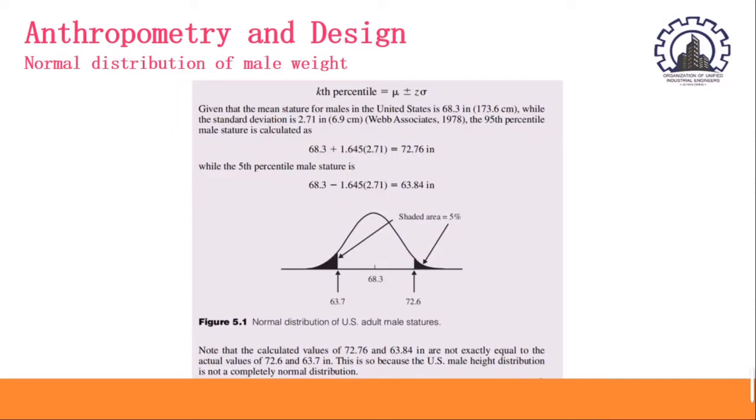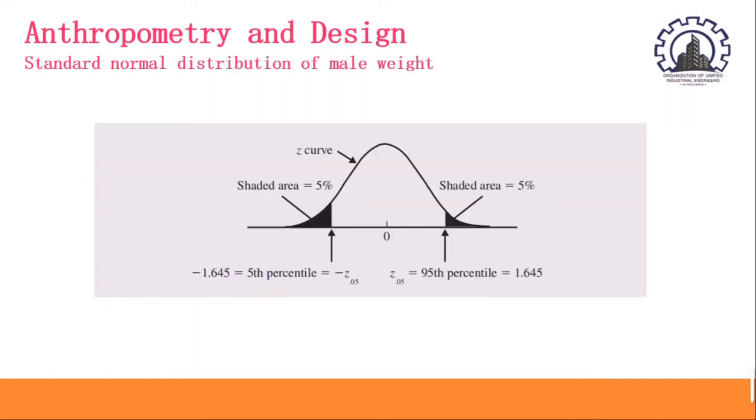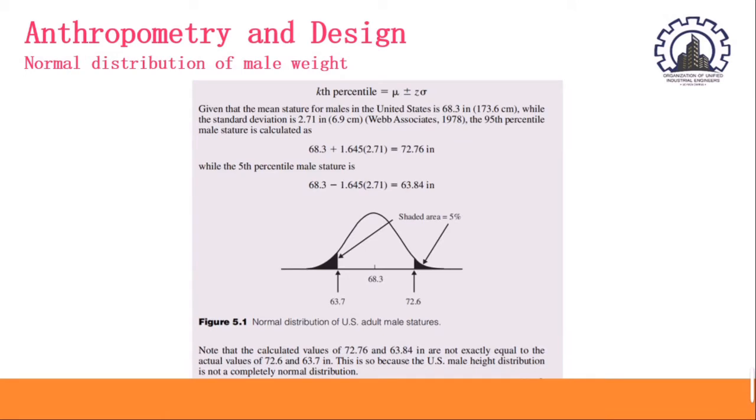Now, we are going to look at the normal distribution curve. As you can see, the figure below is closely related or identical to the standard normal distribution of male weight. Shaded area of the left side is 5% as well as the right side, and the left side is the 5th percentile, while the right side is the 95th percentile. And note that the calculated values of 72.76 and 63.84 are not exactly equal to the actual values in the table, which is 72.6 and 63.7 inches. This is also because the U.S. male height distribution is not a completely normal distribution.